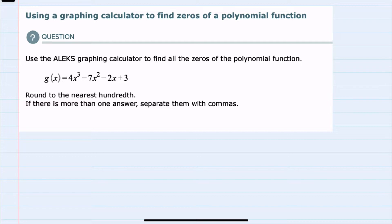We're given a polynomial here, g of x, and we're asked to find all of the zeros using a graphing calculator and to round those zeros to the nearest hundredth. Since this is a third degree polynomial, I would expect to find as many as three zeros.